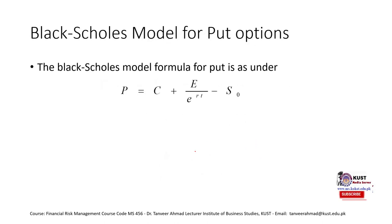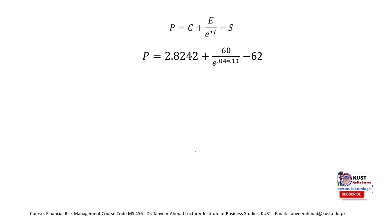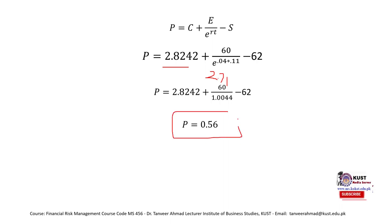To find the value of the put option, we use the put-call parity formula. We input the call option premium found previously, the exercise price of 60, divided by e (the constant 2.71) raised to the power of 0.04 times 0.11 (which is the time duration and risk-free rate), minus the spot price. This gives us a put option value P of 0.56 rupees.